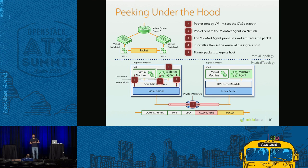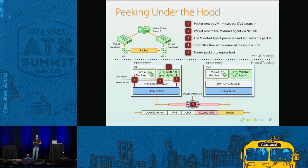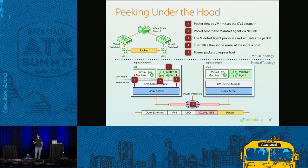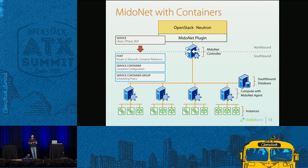In more detail: in MidoNet we leverage the OVS kernel module. We have OVS in the kernel and on top in user space we put the MidoNet agent. When an instance sends a packet, MidoNet intercepts it, runs the simulation, and then depending on whether the packet has to egress the same host or a different host, it's either tunneled to the other host or output to the same host if the VM is on the same physical compute. Now, with this brief introduction to MidoNet, how did we implement service containers?